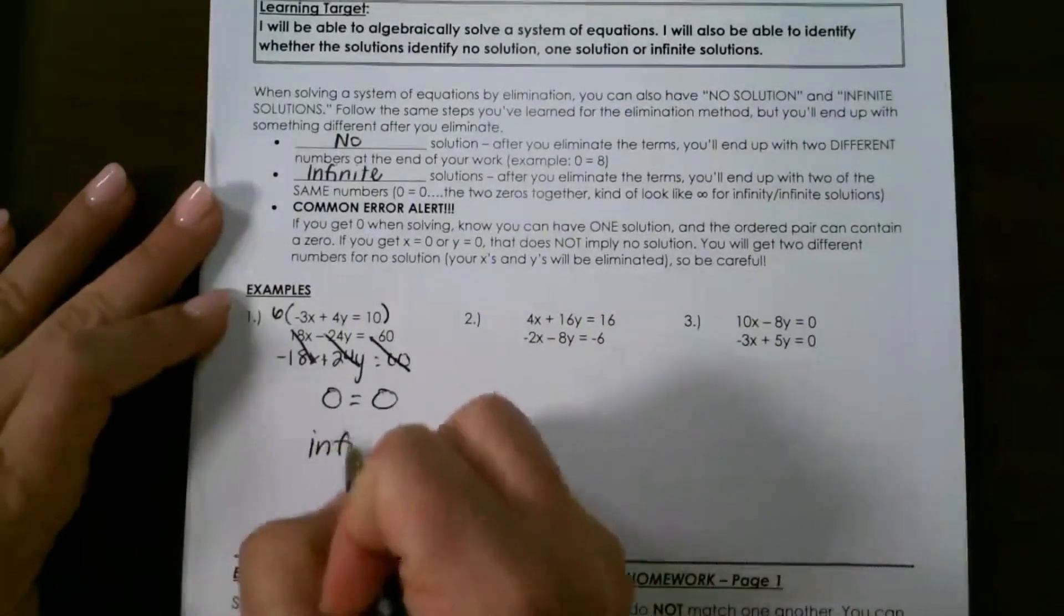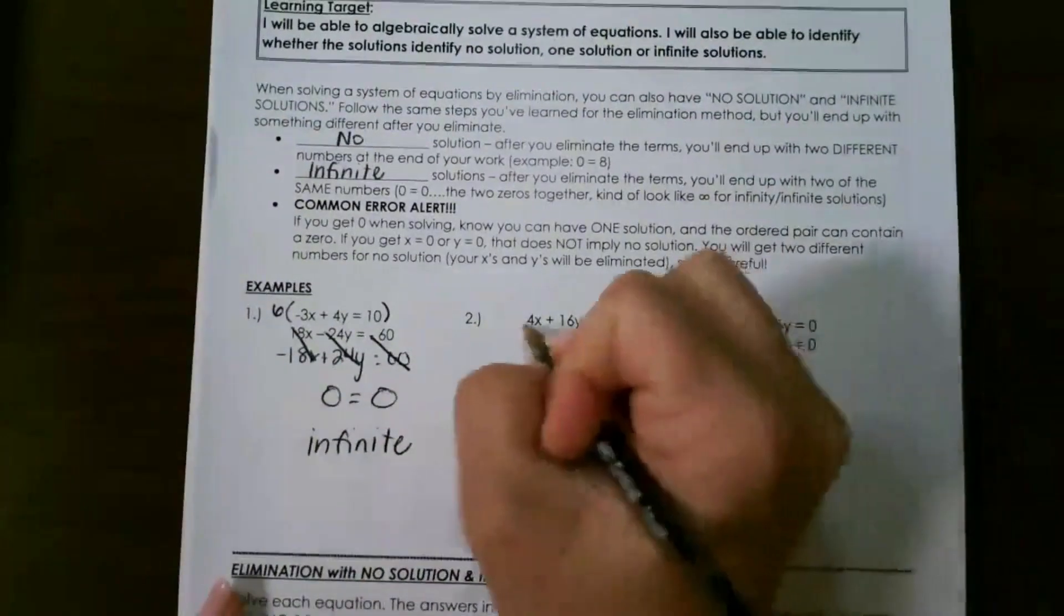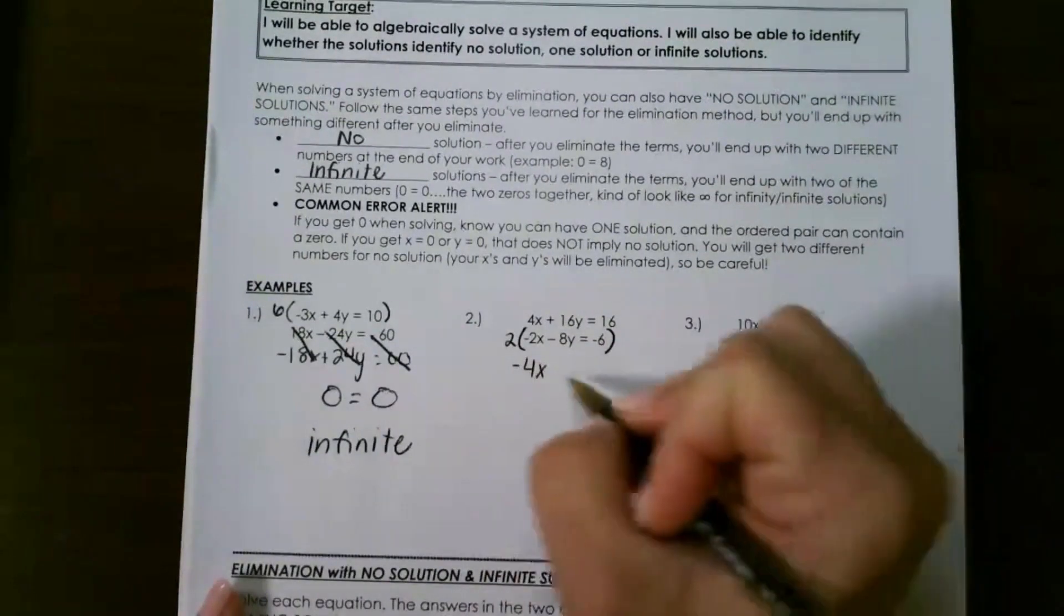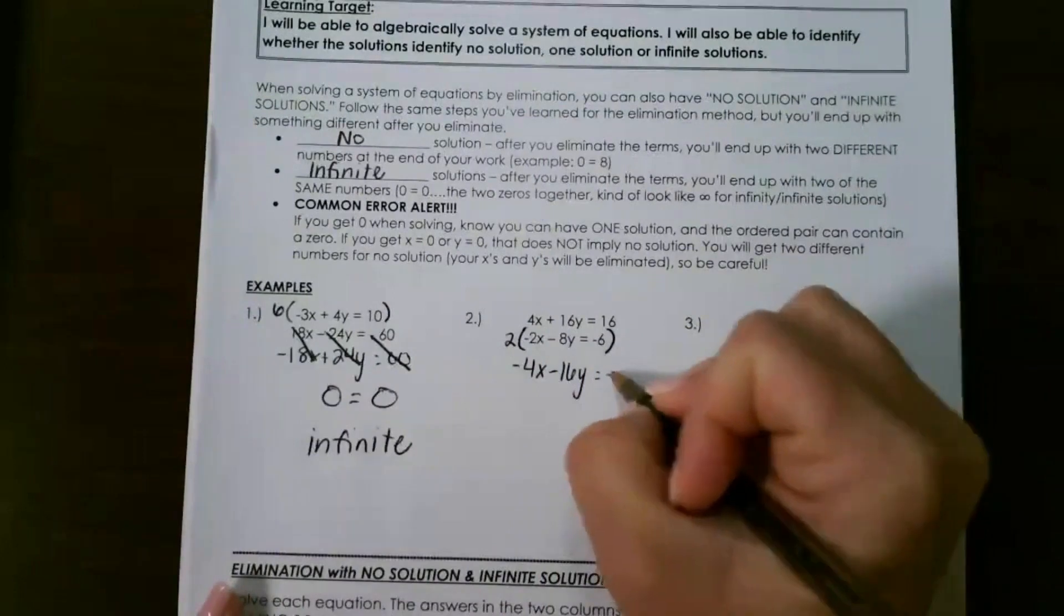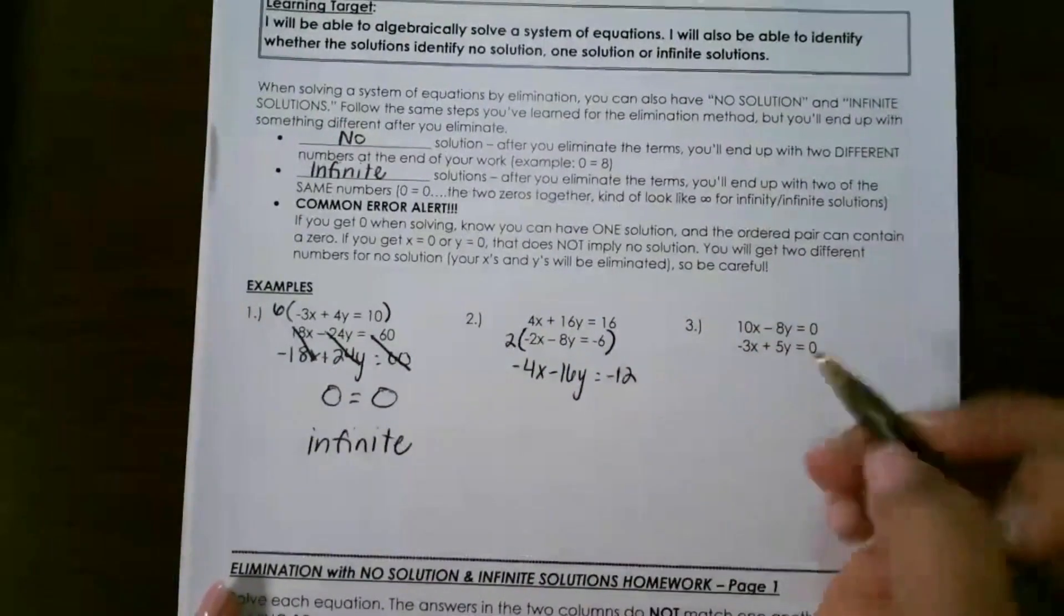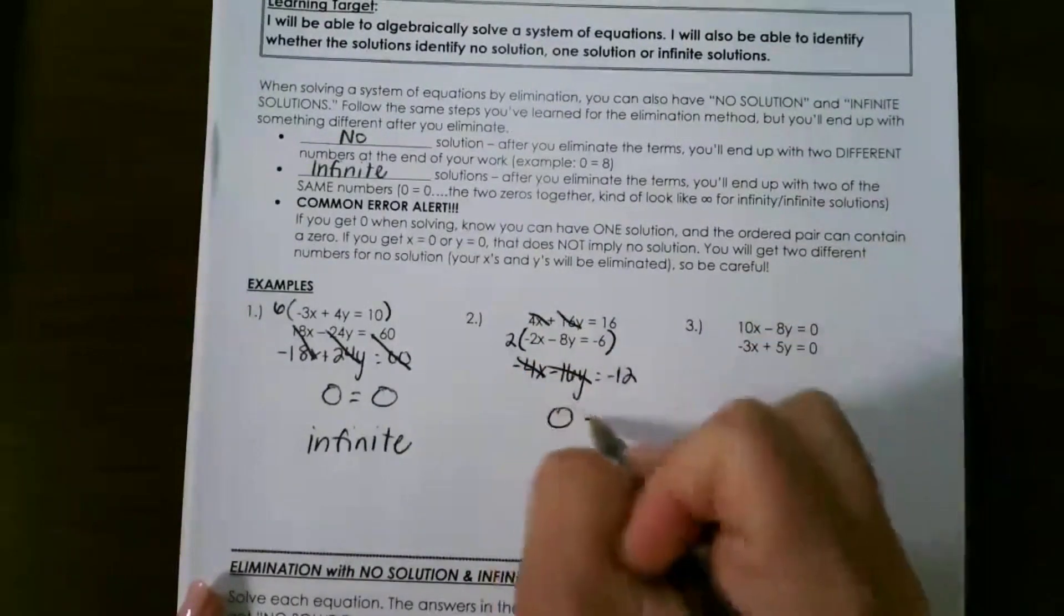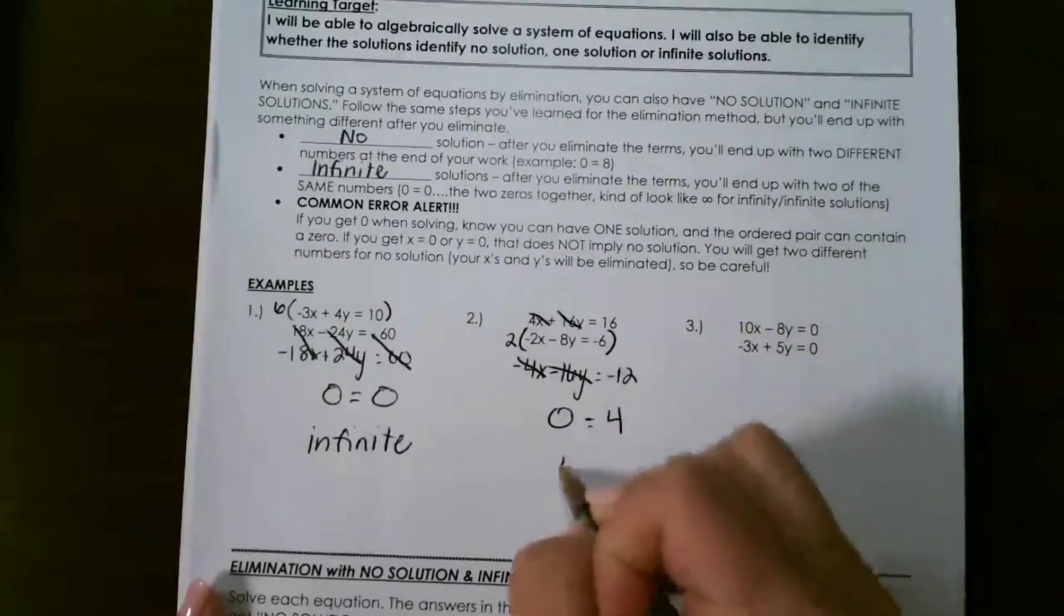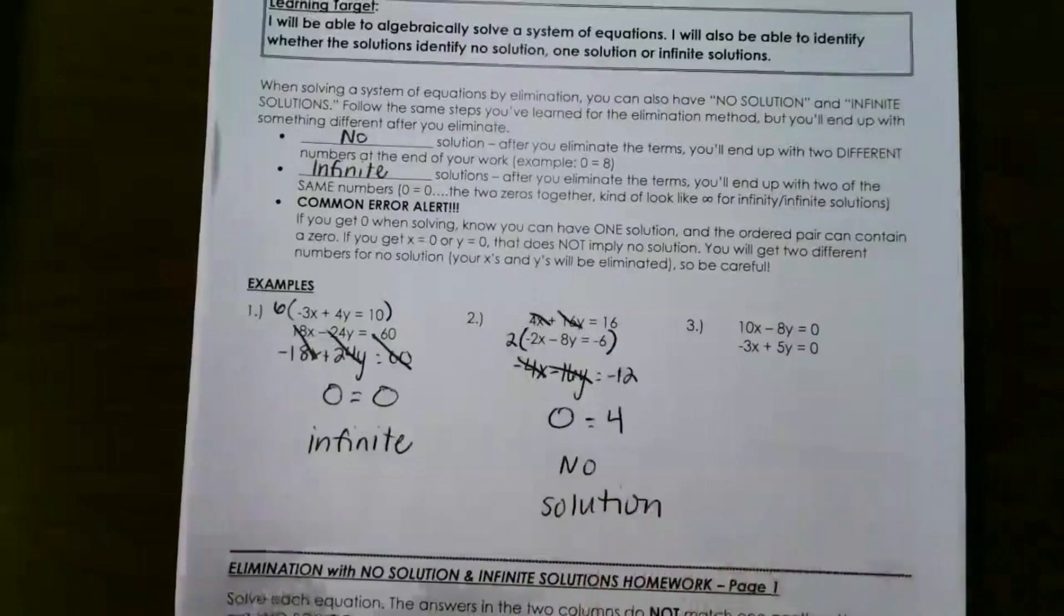For our next one, I'm going to multiply the second equation by 2. It's going to give me negative 4x, negative 16y, and negative 12. That means our x's cancel out and our y's cancel out, which leaves me with 0. 16 minus 12 is 4, so since these are different numbers, we would have no solution here.